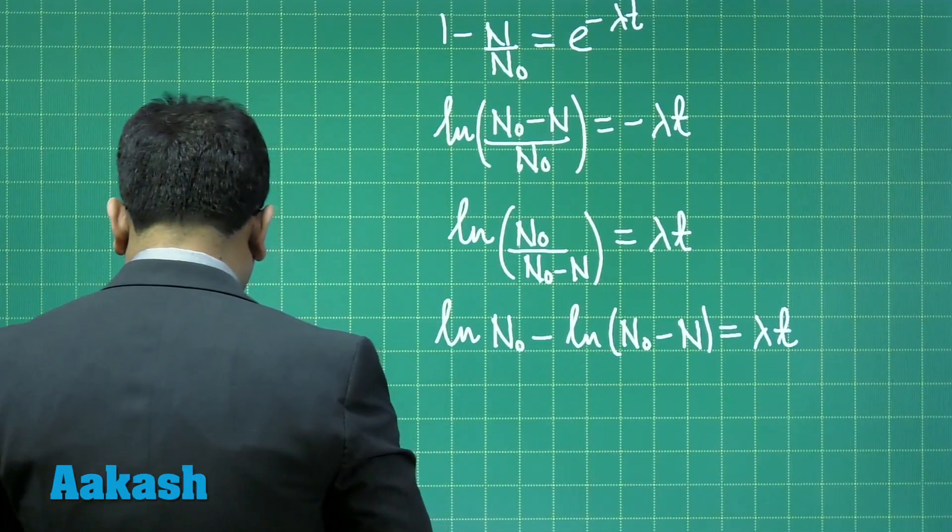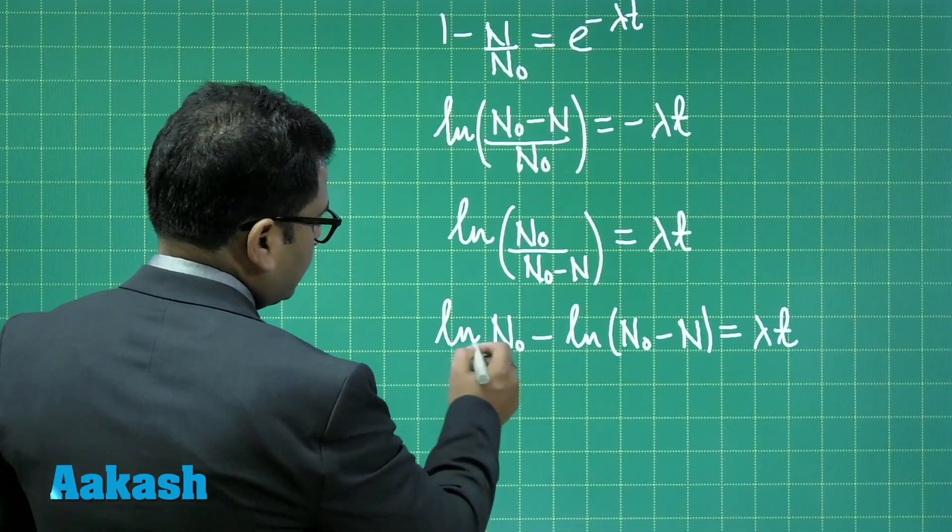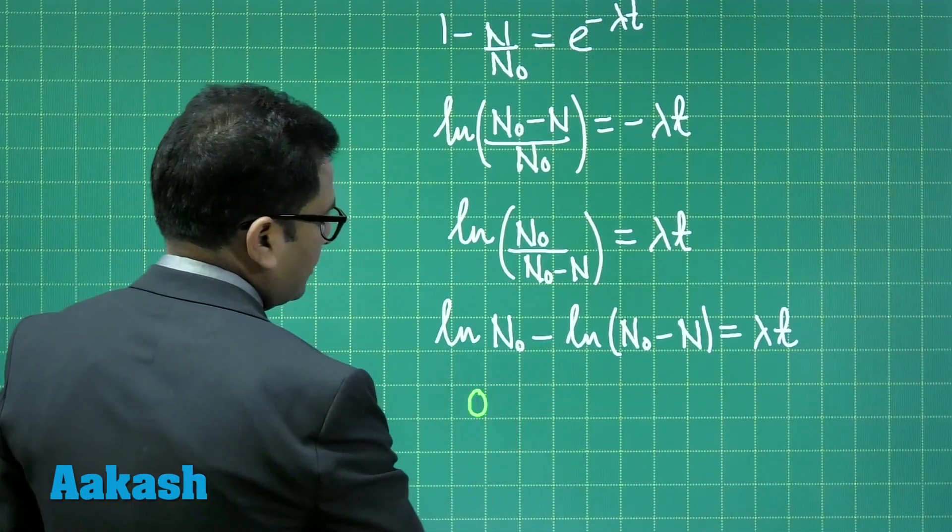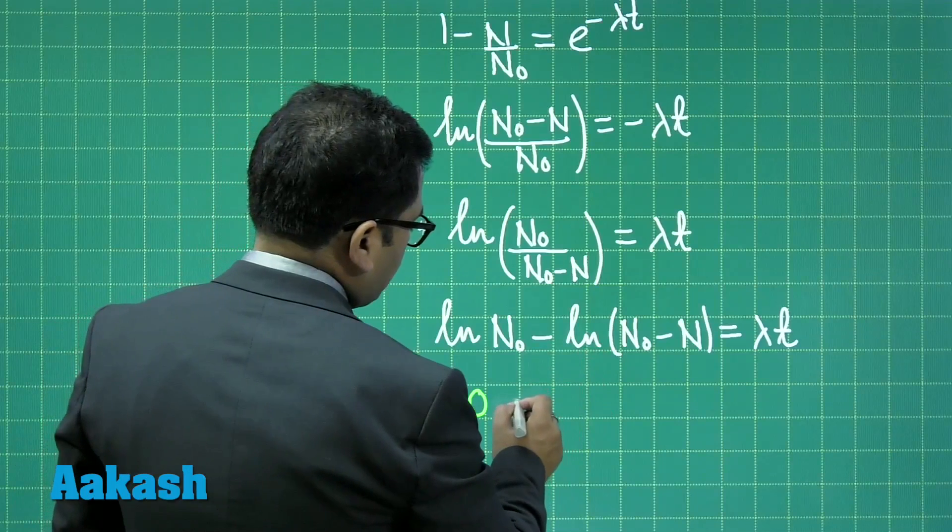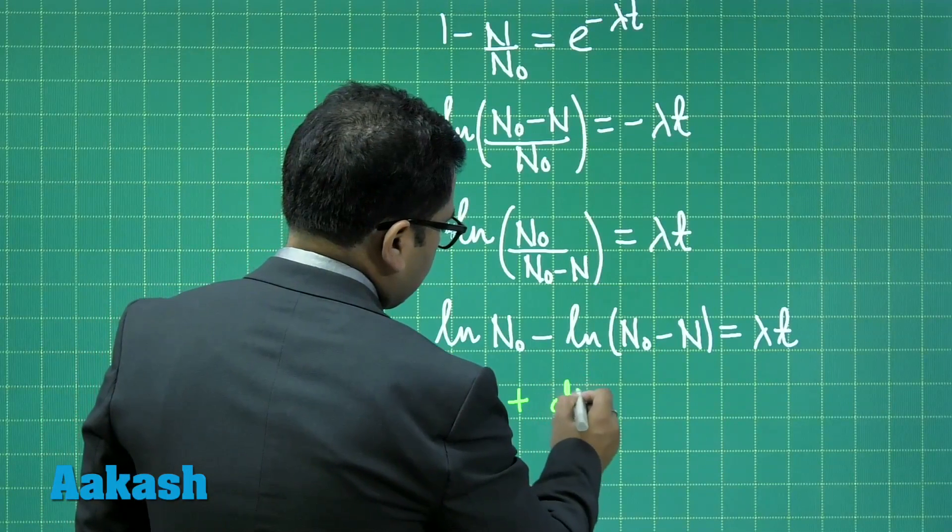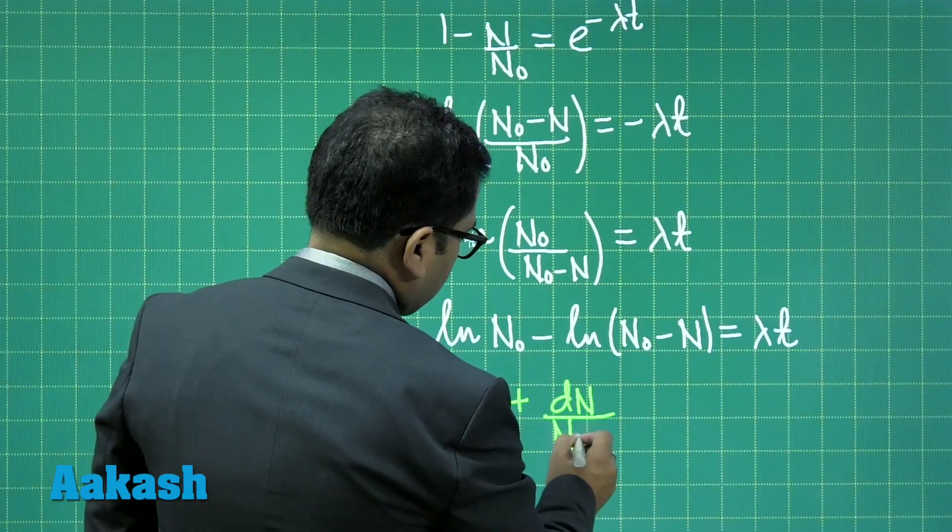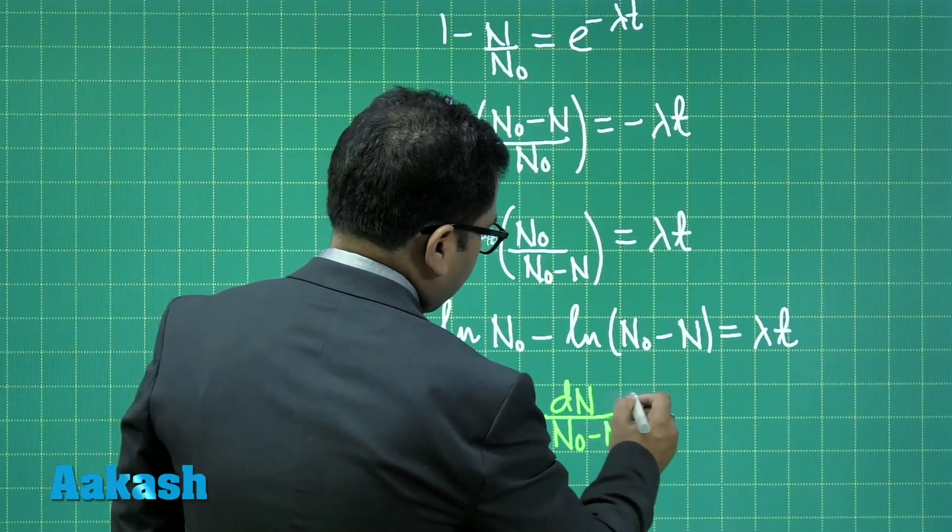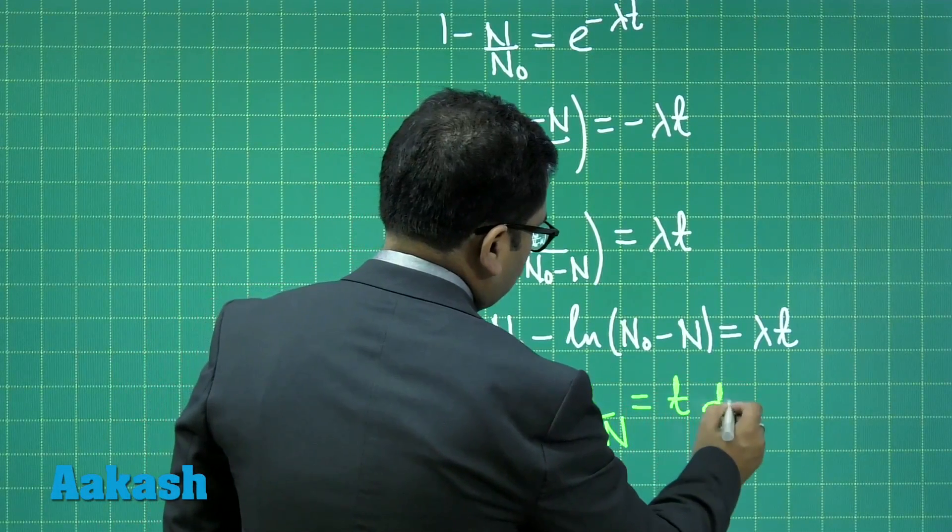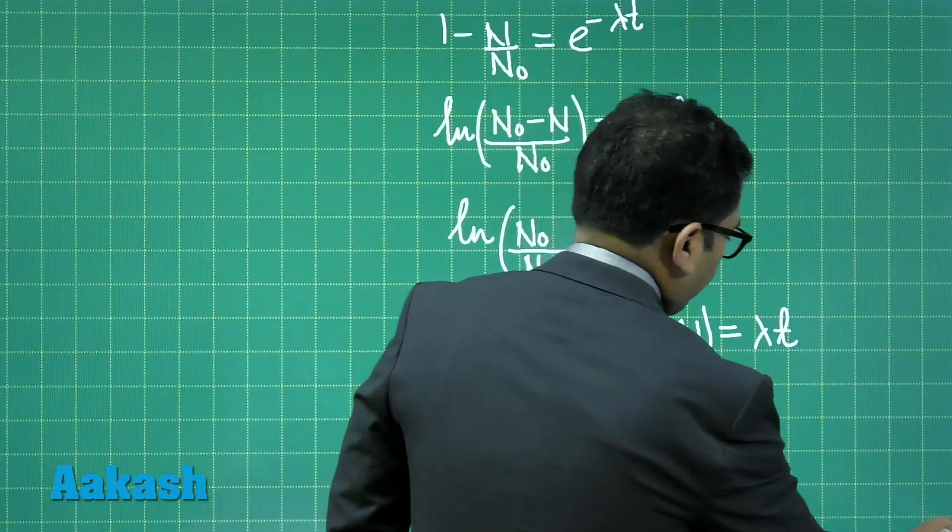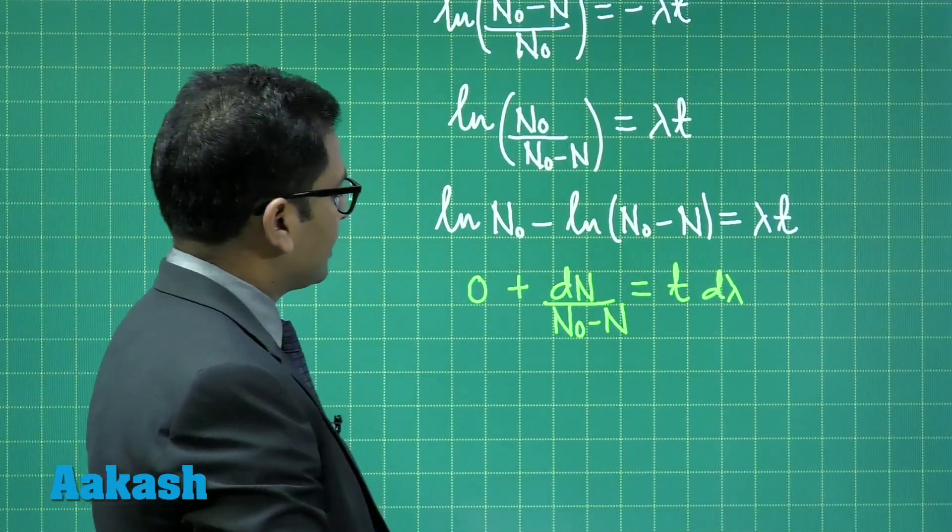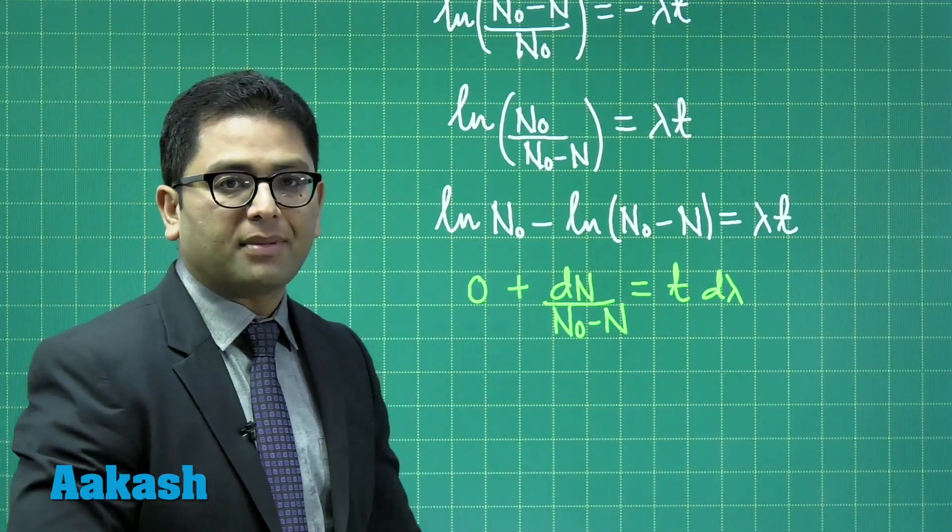Now let's put the differentiation operation here. Since this is constant, that's going to be 0. And this is going to be dN by N naught minus N, and that will be t into d lambda. Well, for the error part, we can replace that by delta lambda.